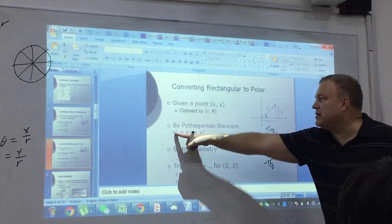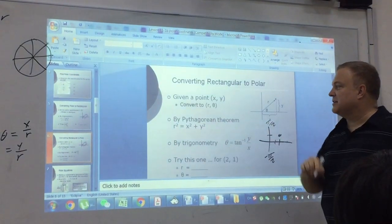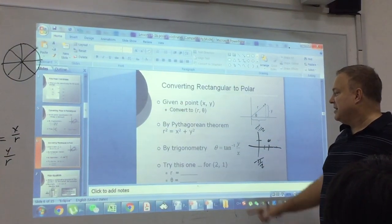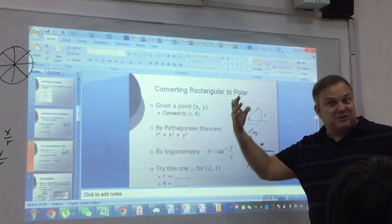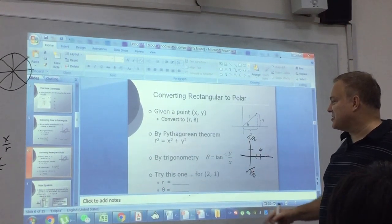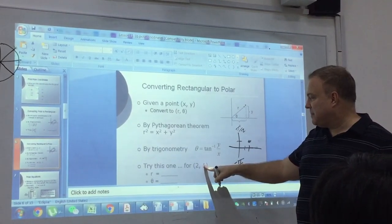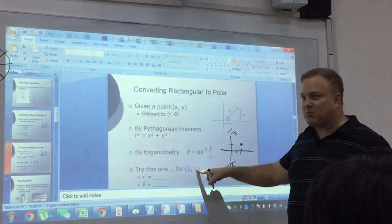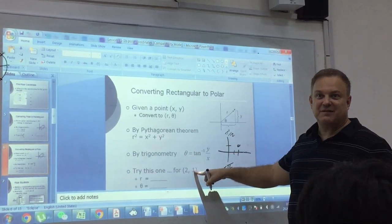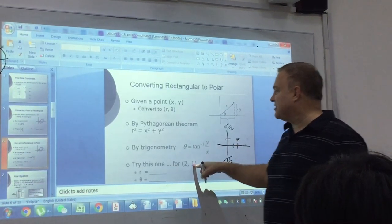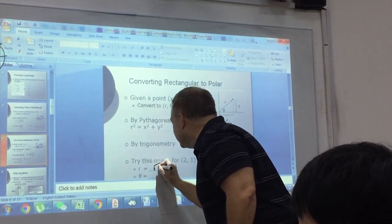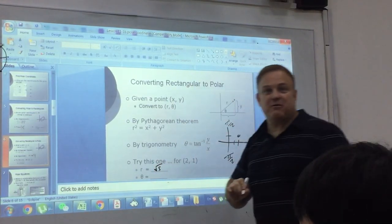So r is easy, right? r² is just x² + y². So just like you did with polar form of complex numbers, you take the square root of the square plus the square. So 2² + 1² is how much? 5. And then you take the square root. Pretty easy, right?